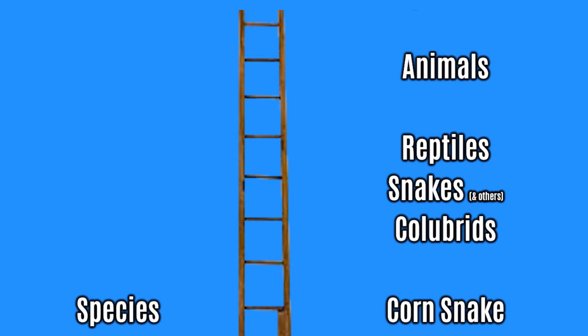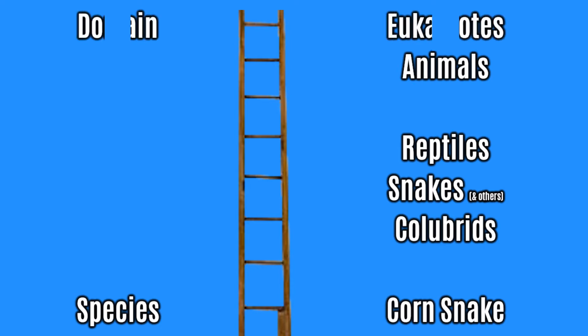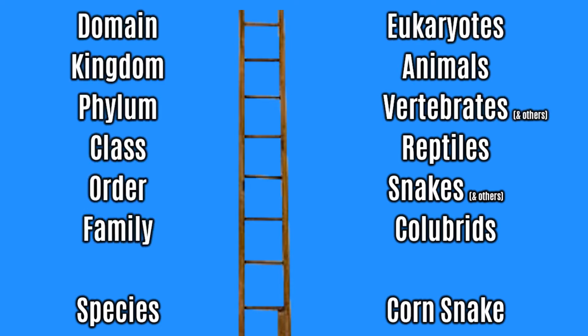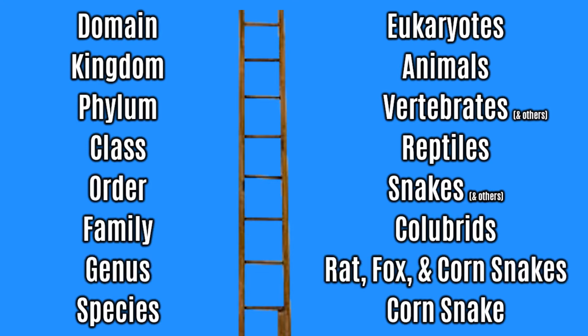Popularly, the other rungs are labelled domain, kingdom, phylum, class, order, family, genus, and of course species at the bottom.